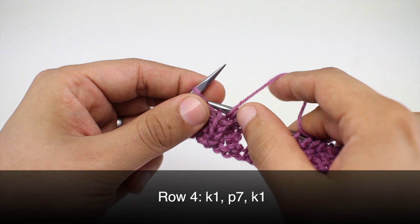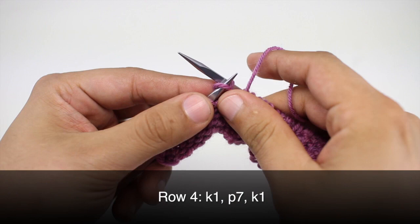We'll knit rows one through four until we've reached our desired length. And that's how you knit the fagoted panel stitch.